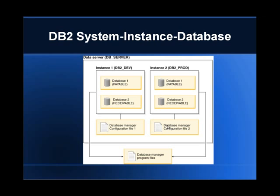The number of connections is also configurable. For instance, Instance 1 can be set to allow only 10 maximum connections, whereas Instance 2 can allow 50. It is completely doable through the configuration file — the database manager configuration file. Whenever we say 'instance' and 'database manager,' they mean one and the same. By this way, instances really allow us to group our environments.